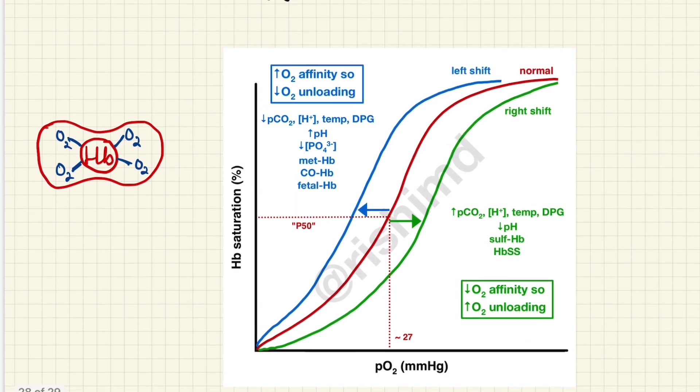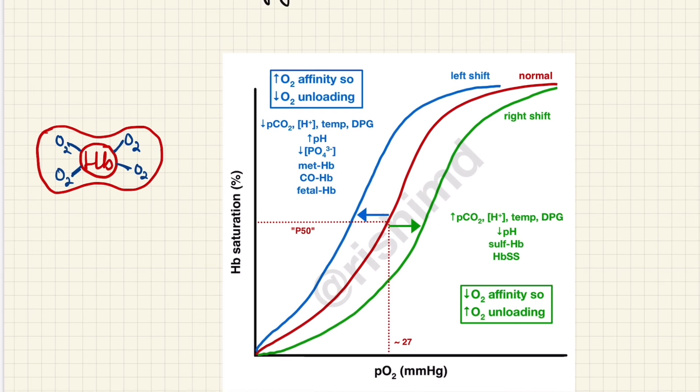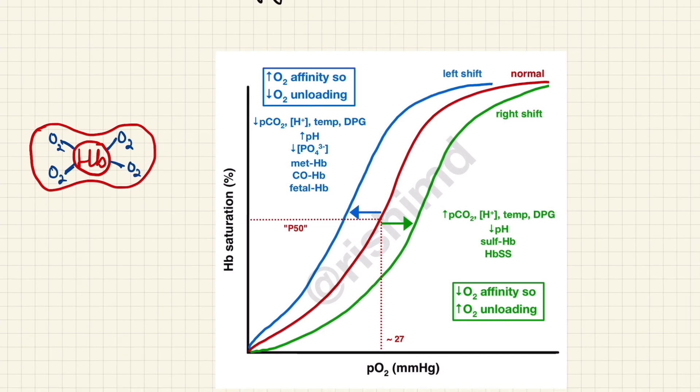Now, this curve: the binding of oxygen to the hemoglobin is dependent on some factors, and the most important factor is the partial pressure of oxygen. So as the partial pressure of oxygen increases, the saturation of hemoglobin with oxygen also increases, and this comes out to be a sigmoid curve.